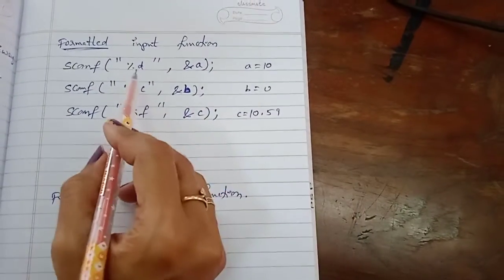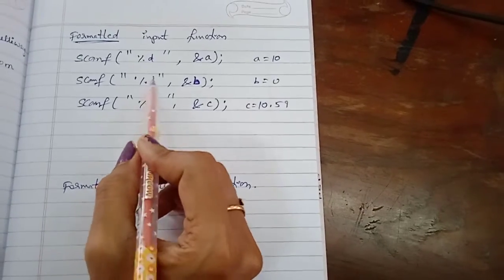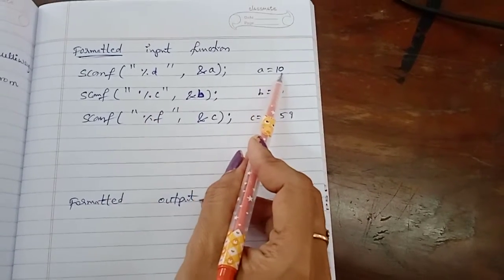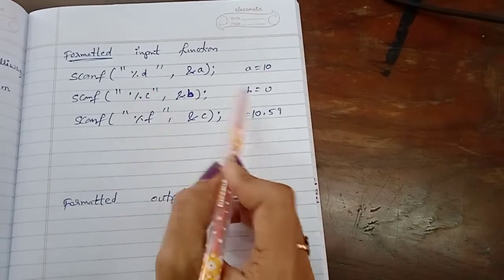These are the examples and we can change the format specifier according to our required data. If suppose it is integer data type, if you want to input a 10 you should use %d.